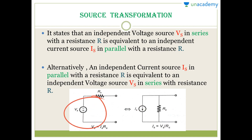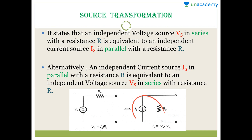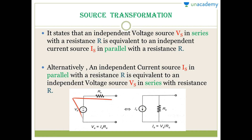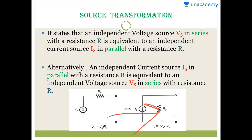One more thing: note the polarity — if we have minus then plus, wherever the plus is, the tip of the arrow direction in the current source will be there. So if the plus is downward, the arrow points downward. Alternatively, an independent current source in parallel with a resistance can be converted into an independent voltage source in series with the resistance. To find the voltage source, apply Ohm's law: V equals IR. To find the current I, divide the voltage source by the resistance.